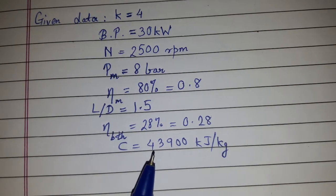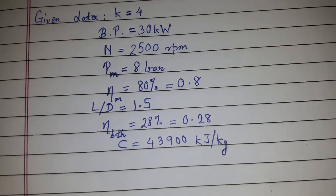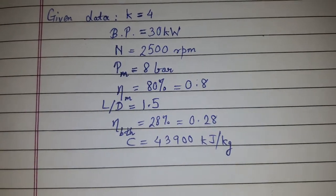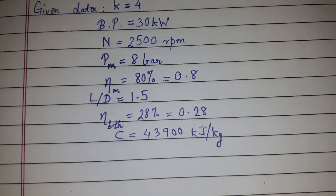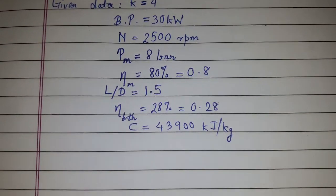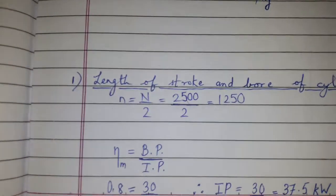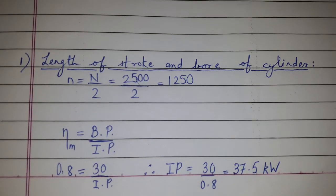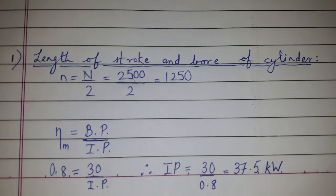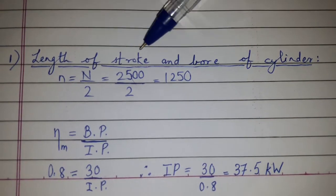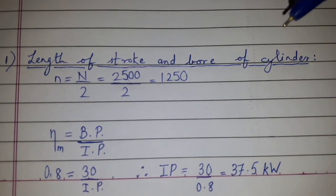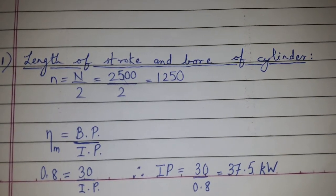Brake thermal efficiency is given as 28 percent, that is 0.28. Calorific value is given as 43,900 kJ per kg. Now we need to calculate capital L and capital D. For that, we have certain information which we need to use to calculate capital L and capital D. Here, length of stroke and bore we need to calculate, that is capital D and capital L.